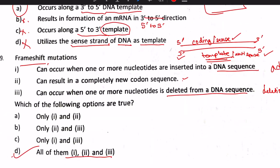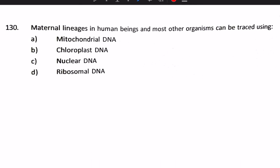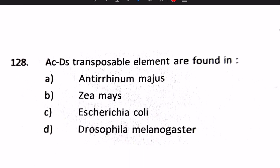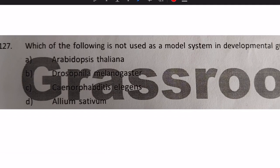Now we move to the 2015 question paper. First question: maternal lineages in humans and most other organisms can be traced using mitochondrial DNA, because mitochondria have their own genomes and are inherited from the maternal side. Answer: option A, mitochondrial DNA. Next: AC/DS transposable elements are found in Zea mays, from the famous experiment by Barbara McClintock. Answer: option B.